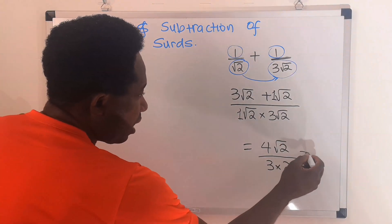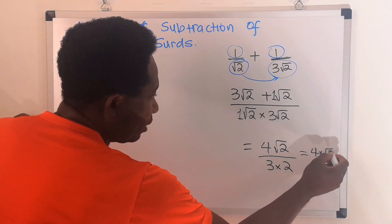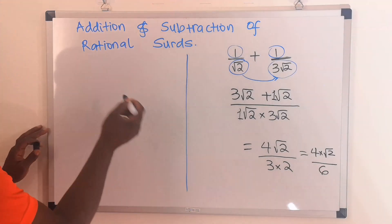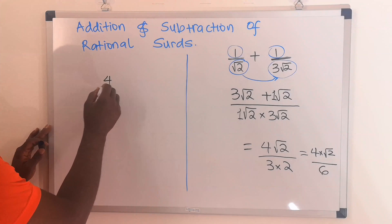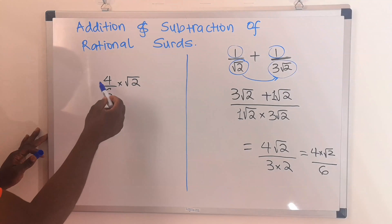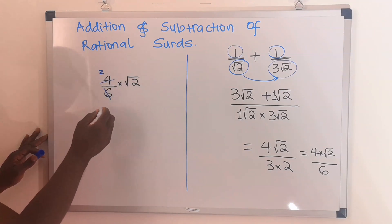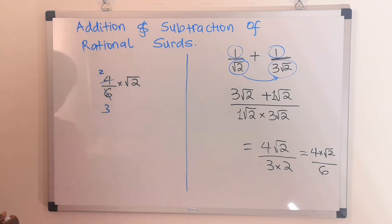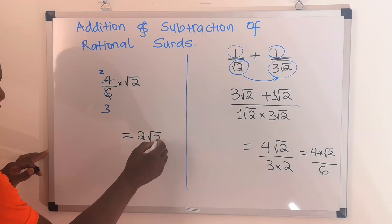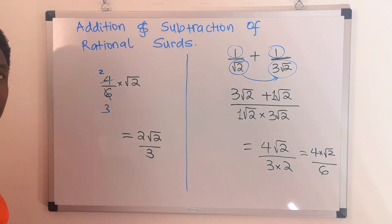Next, here we are going to have 4 multiplied by root 2 divided by 6. We can write this as 4 divided by 6 multiplied by root 2. 2 can go into 4 twice and into 6 three times, so our answer becomes 2 root 2 divided by 3. And this becomes our answer.